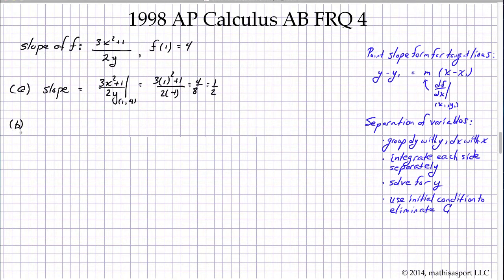Part B asks for the equation of the tangent line at this point, the line tangent to the curve. So we're going to use that point-slope formula. We're going to write y minus 4, that's our y1 value, equals the slope that we calculated in the previous step times x minus our x value.